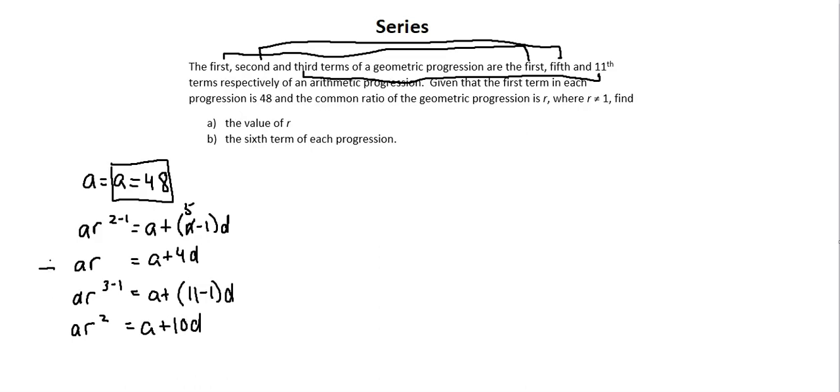Now, of the two remaining equations with unknowns for my r, looking at requirement a, the value of r. In the first equation there, I've pointed out with the arrow, I have r to the power of 1. That's easier to work with than the r to the power of 2 in the second equation. So I'm going to come up here and working with this equation. The a I know is 48. So I'll replace the a's with 48. So 48r equals 48 plus 4d. And now to solve for r, I'll divide both sides by 48. r equals 48 plus 4d over 48.